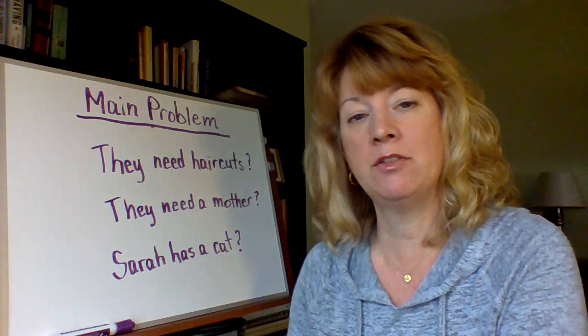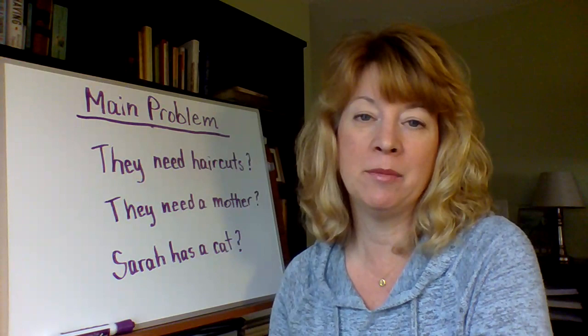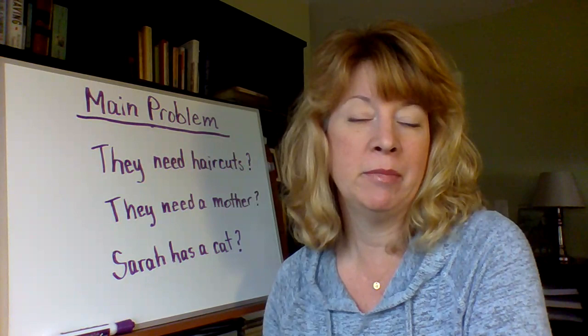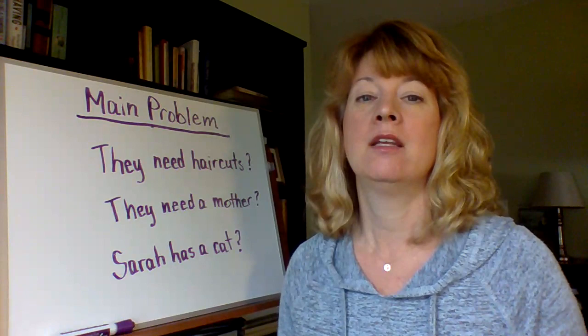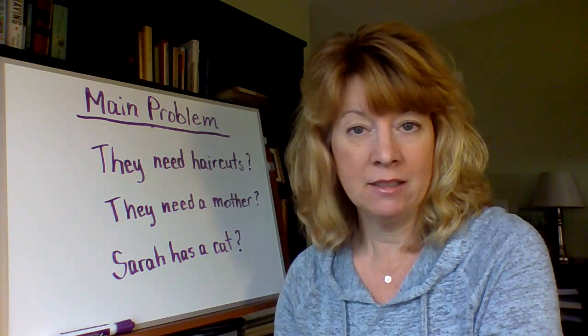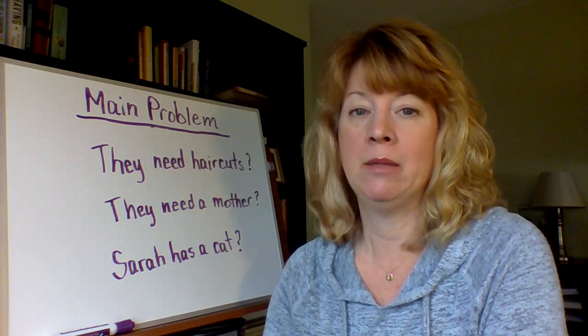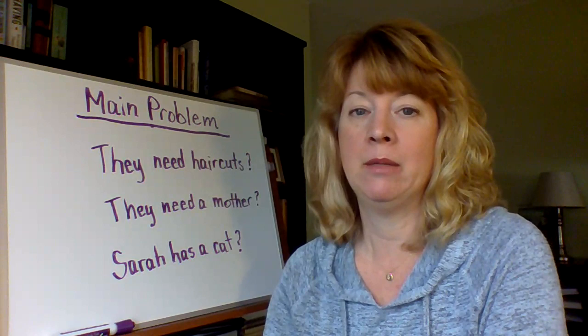I've listed three things that have happened in the story, but none of them are the main problem. It's up to you to decide what the main problem is. A main problem is the problem that presents itself in the beginning of the story and usually takes the entire story to solve — to find the solution. So if you've identified the main problem so far, keep reading. This week we're reading chapters 5 and 6 and you may be able to confirm what you think the main problem is.